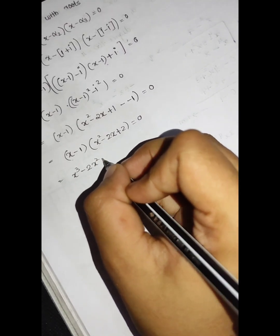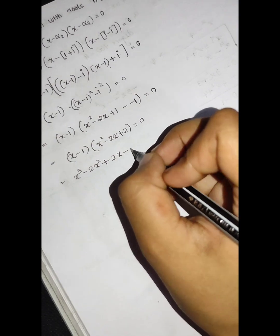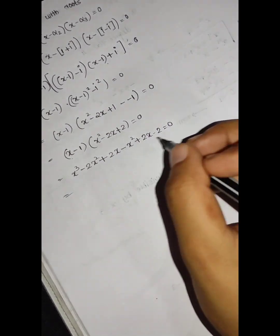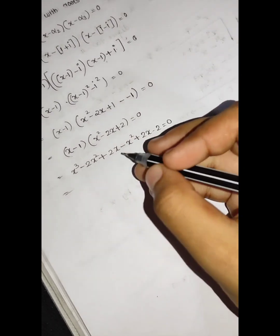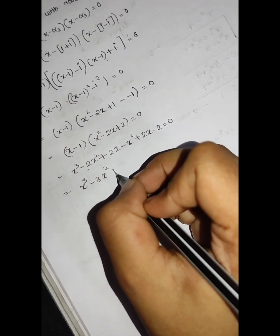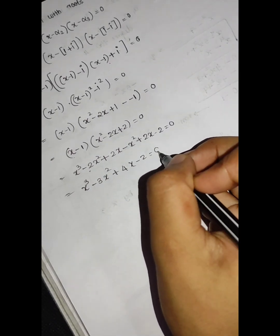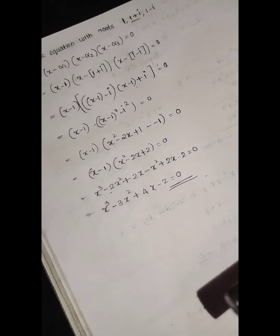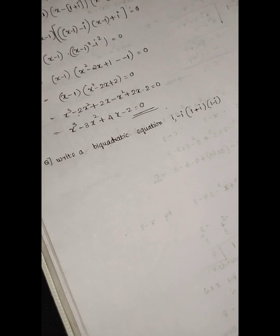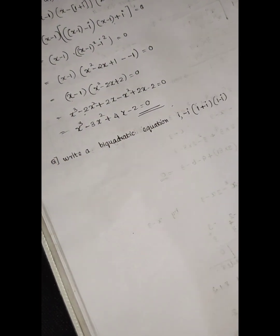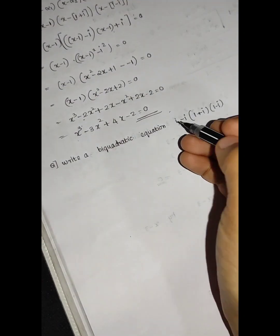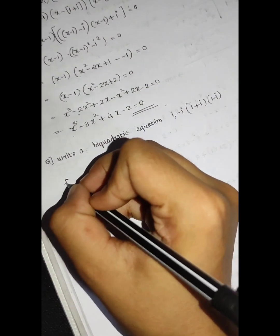Expanding: x cubed minus 2x squared plus 2x minus x squared plus 2x minus 2 equals zero. Collecting terms: x cubed minus 3x squared plus 4x minus 2 equals zero. This is the cubic equation we need to solve. This leads to a biquadratic equation involving x raised to 4 terms.